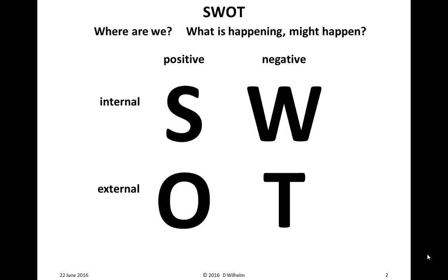Strengths and opportunities are both positive. Weaknesses and threats are both negative. Strengths and weaknesses are actual — they're really there, there's no potential about them. Opportunities and threats may be actual external positive or negative items that have already happened, or they may be potential positive or negative items that might happen.